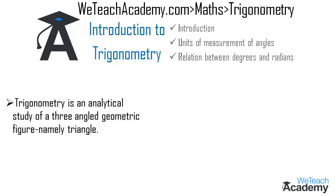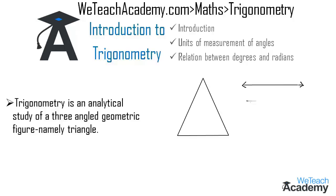A triangle is formed by joining three line segments. A line is a set of points in a plane and it can be extended from both sides. A line that has an endpoint and can be extended only from one side is called a ray.